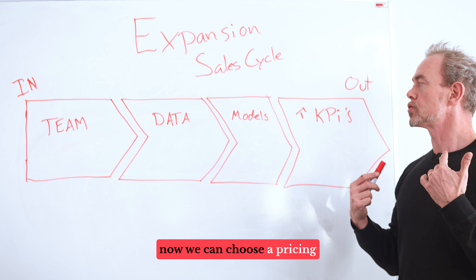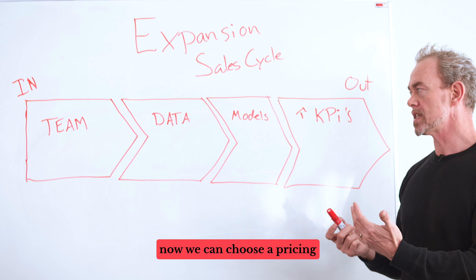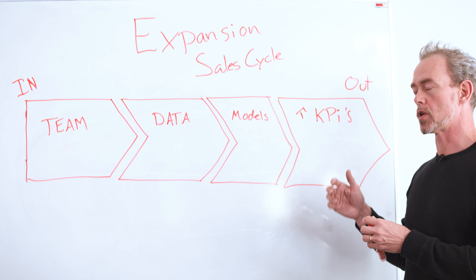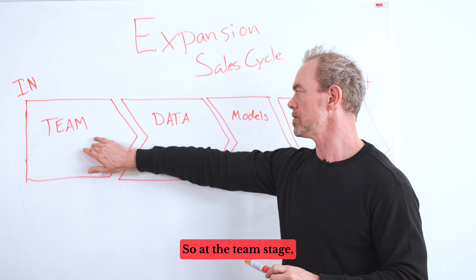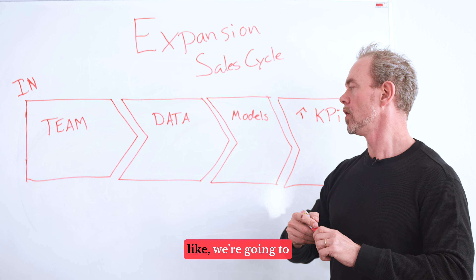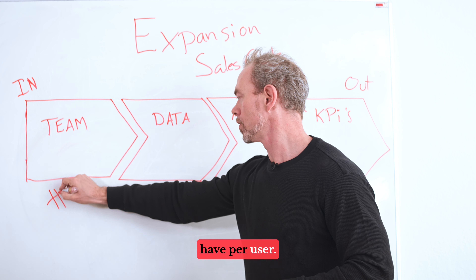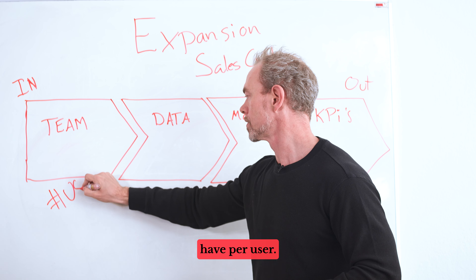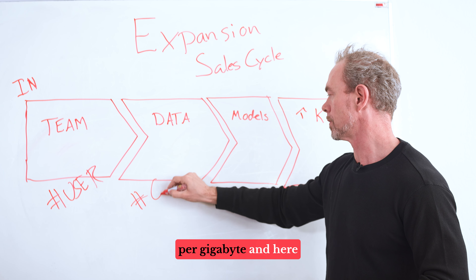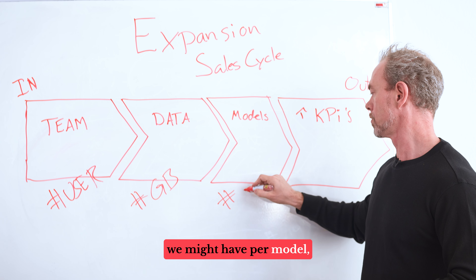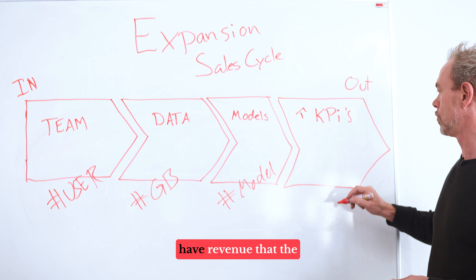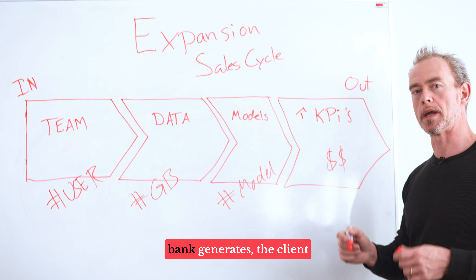We can choose a pricing metric depending on where in the value chain we are. At the team stage, we might say per user. At the data source stage, we might have per gigabyte. Here we might have per model. And at the outcome stage, we might have revenue that the bank generates.